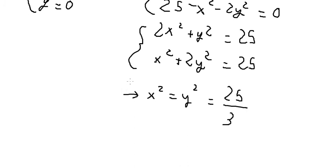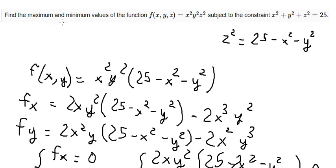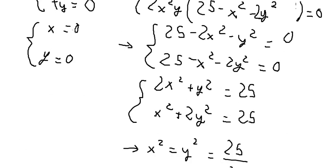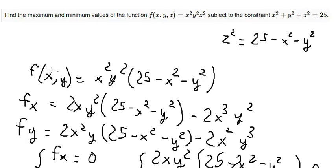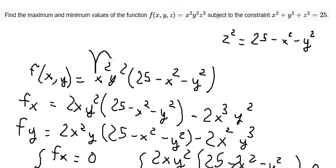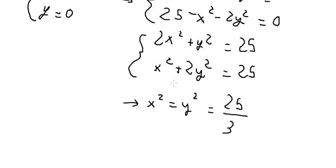The question asks us to find the maximum and minimum values. We have x equals 0, y equals 0. If we put x equal to 0 or y equal to 0, or both equal to 0, into the function f(x, y), we only get the minimum value, which is 0.